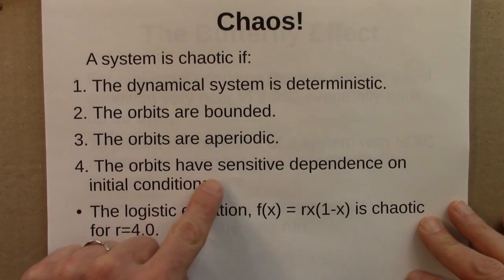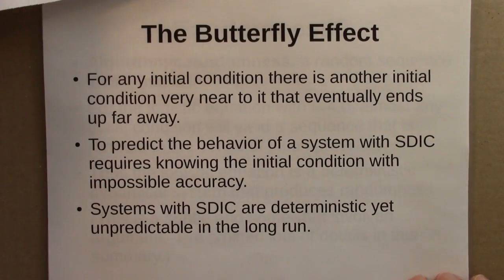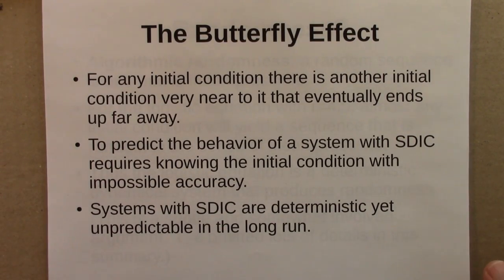Then we focused more on this property, sensitive dependence on initial conditions. It has some important implications. The butterfly effect says that for any initial condition, there's another initial condition very near to it, as near as you can actually make it, that eventually ends up very far away. What this means is that to predict the behavior of a system with sensitive dependence on initial conditions requires knowing the initial condition, your starting value, your measured amount of rabbits or whatever it is you're trying to study, you need to know that initial condition with impossible accuracy.